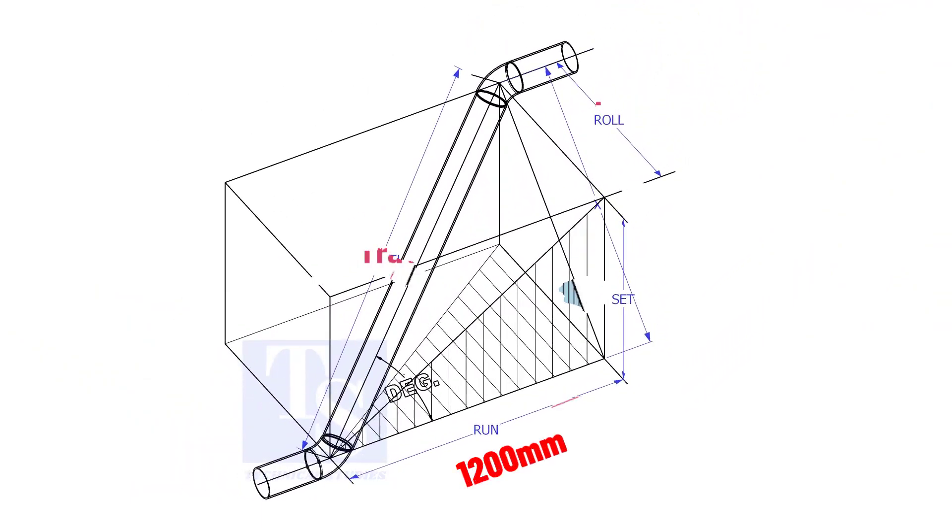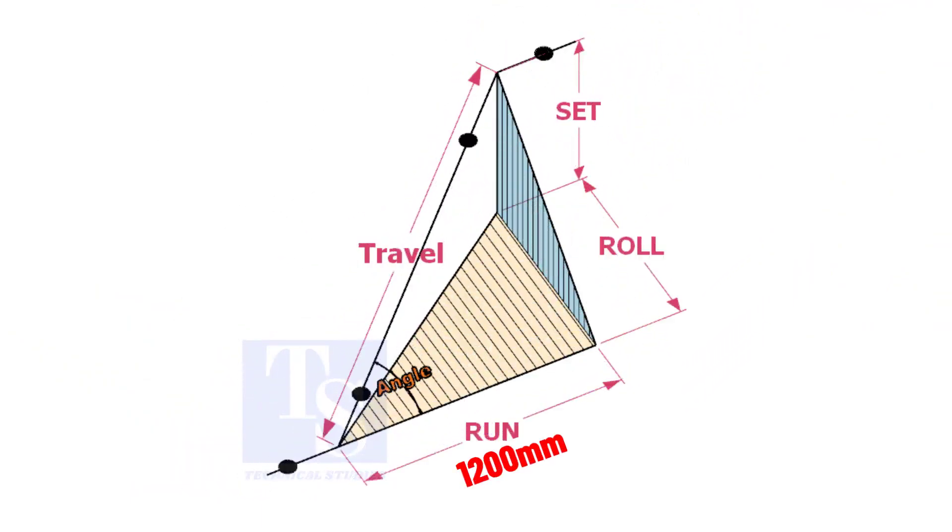Assume that the run is 1200 mm, set is 1000 mm, and the roll is 800 mm. Calculate the travel length.